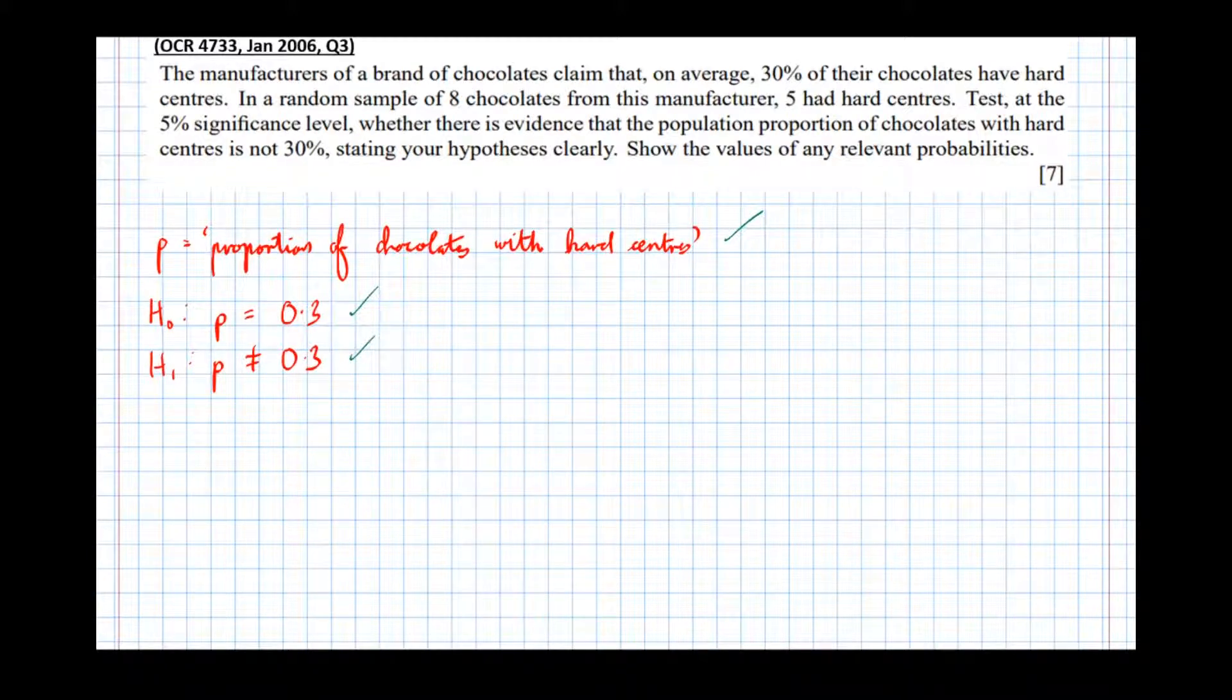Now a note that I'm about to make isn't necessarily worth a mark, but I think it's necessary as a reminder to get the question right. Because we've written p is not equal to 0.3, we don't know whether we're testing for a decrease or an increase as we just discussed, so this makes it a two-tail test. We can see that the significance level is 5%, and that significance level of 5% is split between the two tails, so I'm going to remind myself: 2.5% each tail. Again, not worth a mark, but really good to write down just to remind yourself that we're comparing any p-value that we calculate not to 5% but to 2.5%.